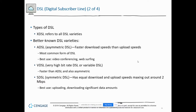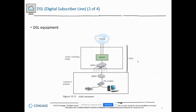VDSL is either Very High or Variable DSL. Then you have Symmetric DSL, which is not as common — download and upload speeds are the same, but it apparently maxes out at two megs. The graphical representation of DSL shows the customer premise with the DSL modem, then the carrier's facility with splitters, and then the DSLAM — the DSL Access Multiplexer — which allows them to put in multiple customers and leverage the power of their network.